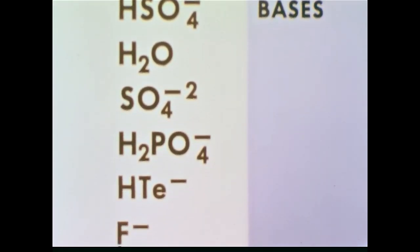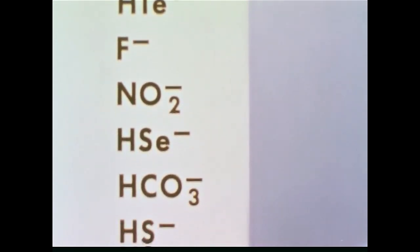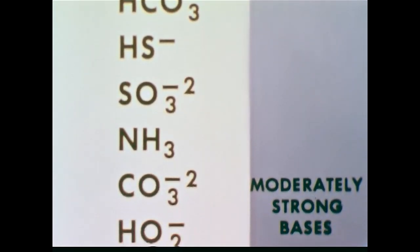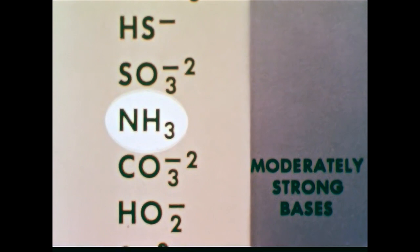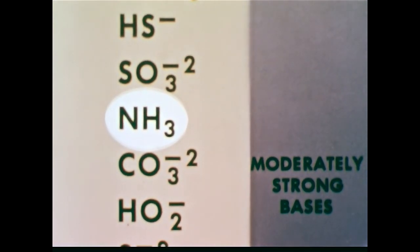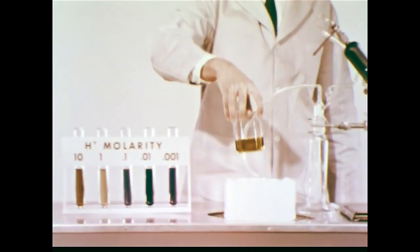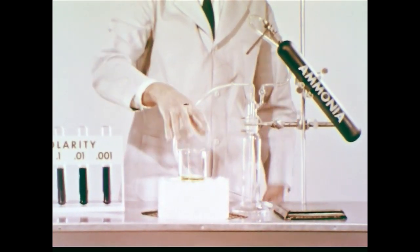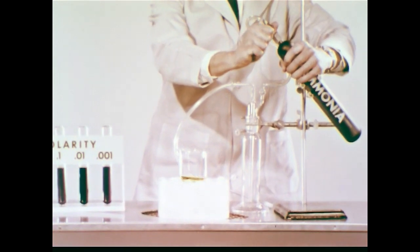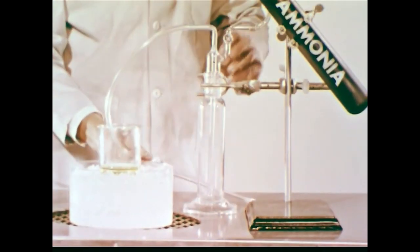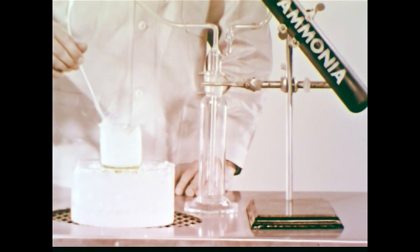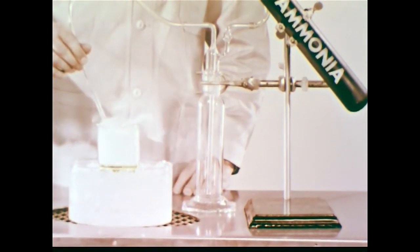Looking down the list for a stronger proton acceptor, preferably a base containing a high percentage of nitrogen, we find NH3 — ammonia. If we add ammonia gas to concentrated nitric acid, the acidity should decrease. The safety trap would catch any backup of nitric acid. The ice bath absorbs most of the heat of the reaction. A glass tube with a porous tip is used to introduce tiny bubbles of ammonia gas into the nitric acid.